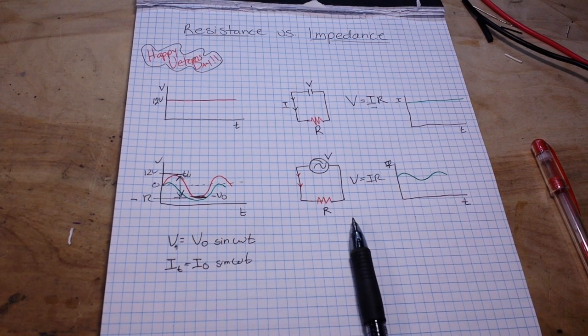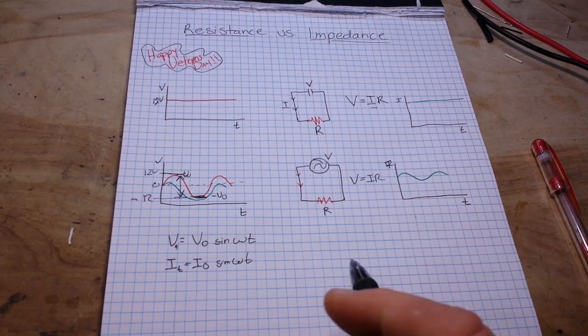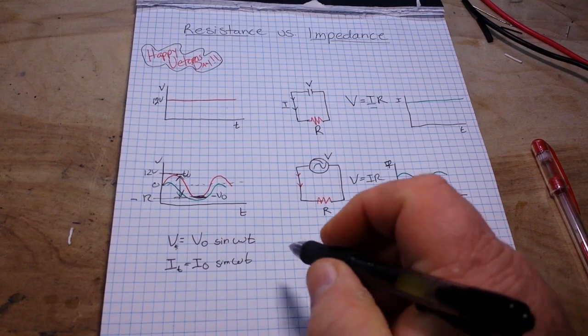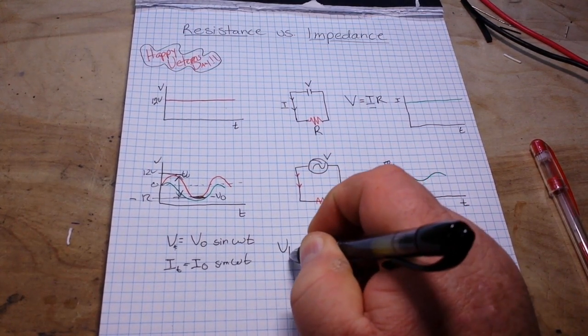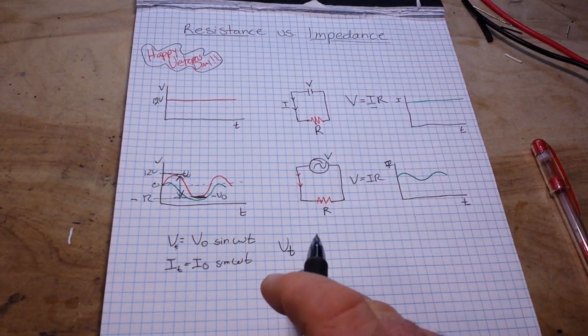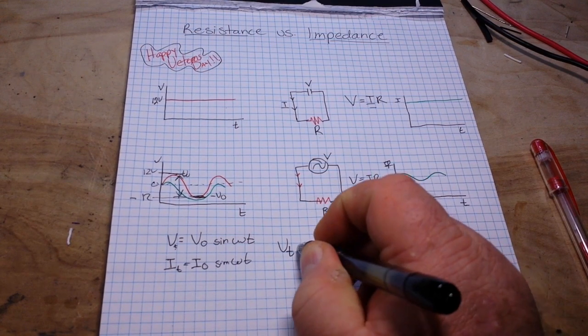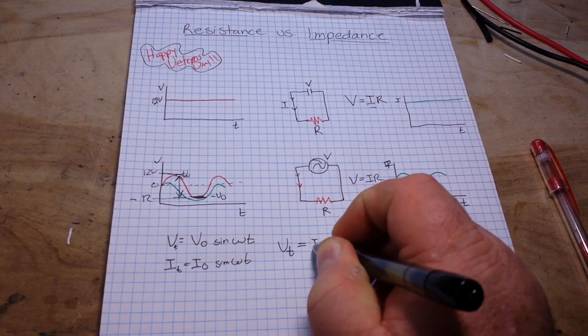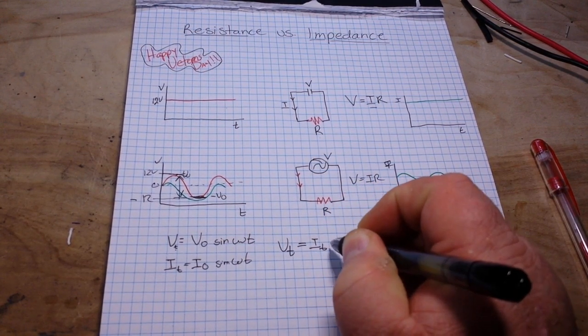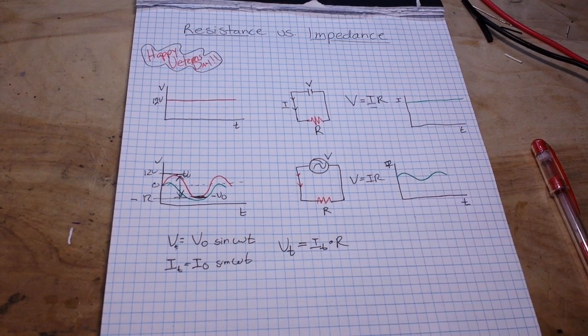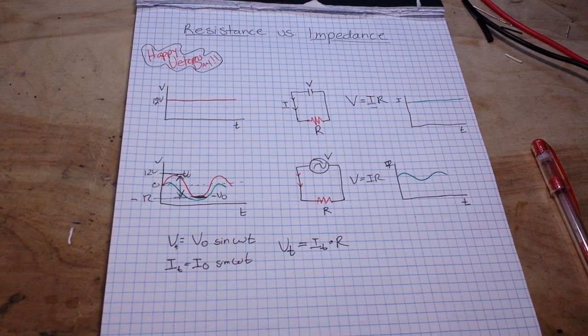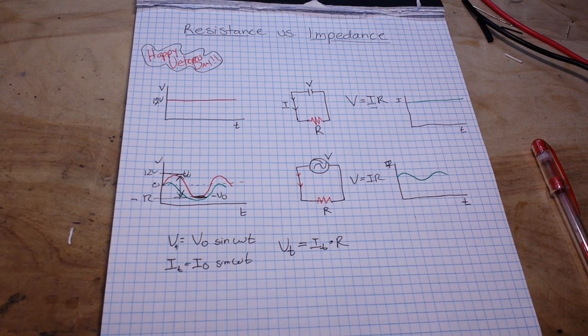And that's the same for the current as well which is determined by the load placed upon the circuit. You can say VT, V at any time T, is equal to IT times R so you can see Ohm's law still applying but now it's simply as applied with the alternating current.